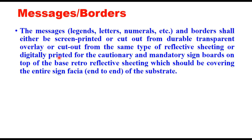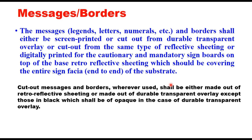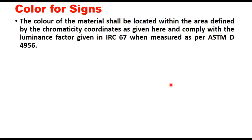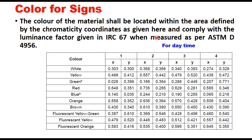Next are messages or borders. Messages such as legends, letters, numerals and borders shall either be screen printed, cut out from durable transparent overlay, cut out from the same type of reflective sheeting, or digitally printed for cautionary and mandatory sign boards on top of the base retroreflective sheeting covering the entire sign end to end. Cut out messages and borders shall be made out of retroreflective sheeting or durable transparent overlay, except those in black which shall be opaque in the case of durable transparent overlays.